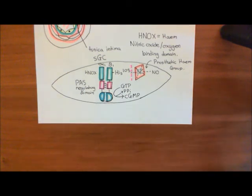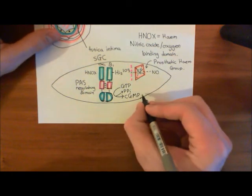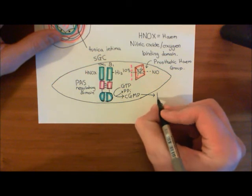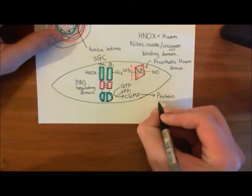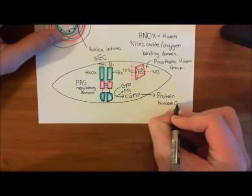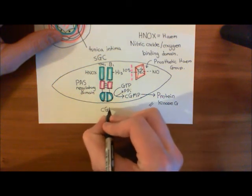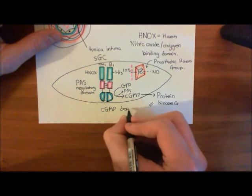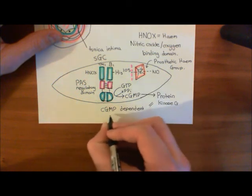Okay, so now let's look at the actions of cyclic GMP. So, cyclic GMP activates an enzyme known as protein kinase G. Okay, so this is protein kinase G. Now, another name for protein kinase G is the cyclic GMP-dependent protein kinase. So, this is also known as the cyclic GMP-dependent protein kinase.